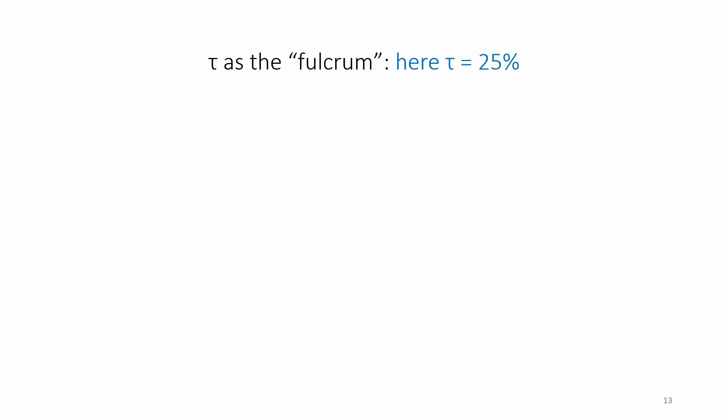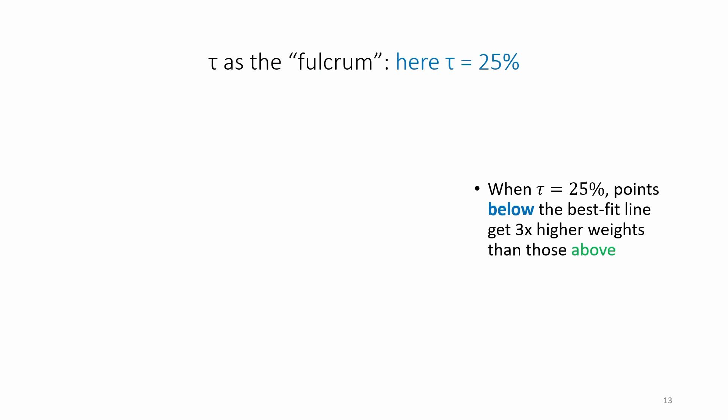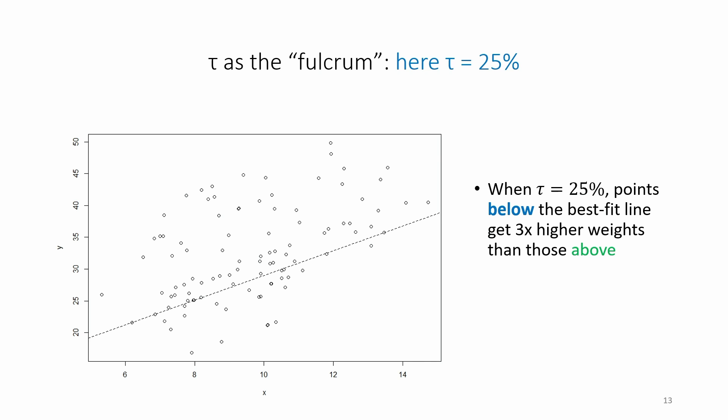This slide repeats the same ideas with a scatter plot. We have the quantile regression line of best fit cutting through the data points with tau equals 25%. Points below the best fit line, shown with the thick blue line, get three times higher weights than those above the line of best fit, shown with the thin green lines.